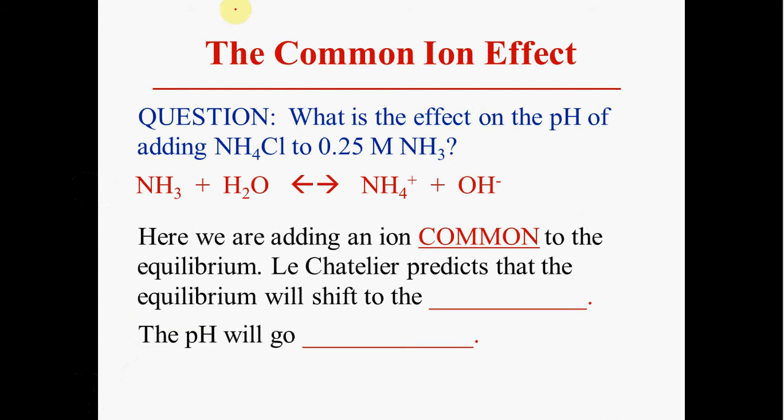The buffer concept is built on the idea of a common ion. A common ion is simply an ion that is placed into an equilibrium situation. Here we have ammonia dissociating in water to form ammonium hydroxide, and now we're adding the salt ammonium chloride to that equilibrium situation. So we're adding the common ammonium ion.